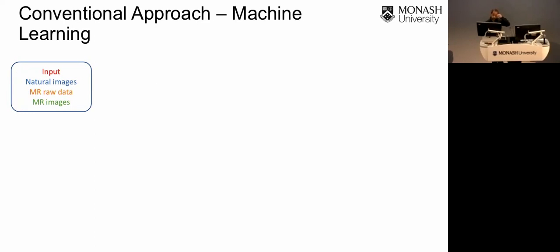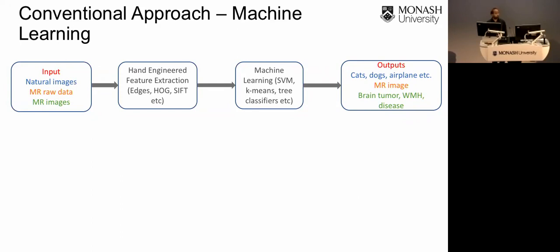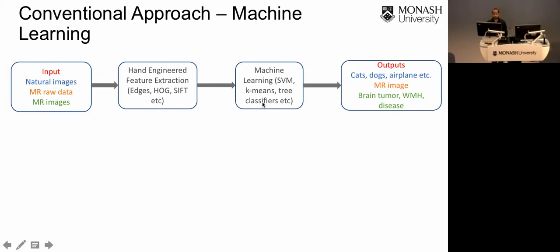With the conventional approach, inputs can be natural images or MR images, and the task is to classify them — for example into cats, dogs, and airplanes, or for MR images into tumor cases, disease cases, or hyper-intensity cases. To do this with the conventional approach, you need expert knowledge to extract features from the raw data — a process called feature extraction or hand engineering. Features can be edges, HOG transform, SIFT transform, or other transforms. These features are then used to train a machine learning algorithm — such as support vector machines, k-means clustering, or tree classifiers — to classify the features into categories.